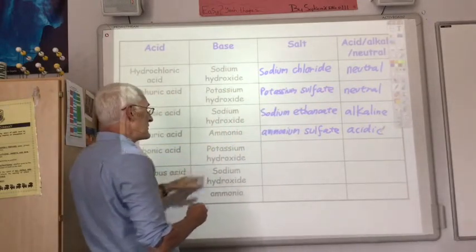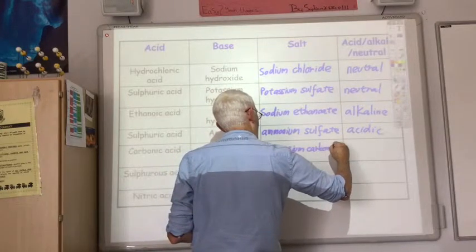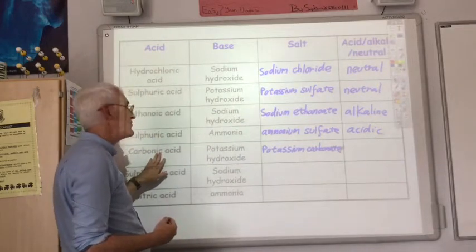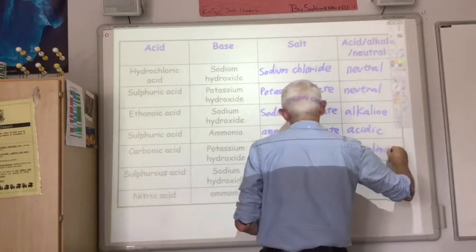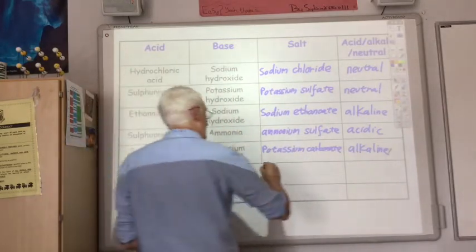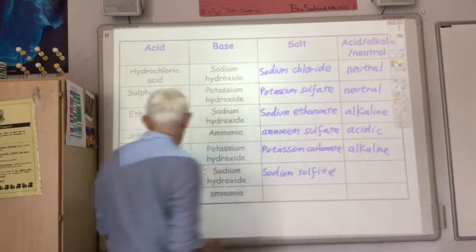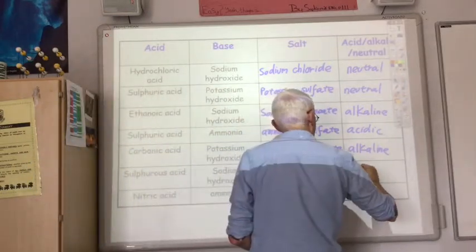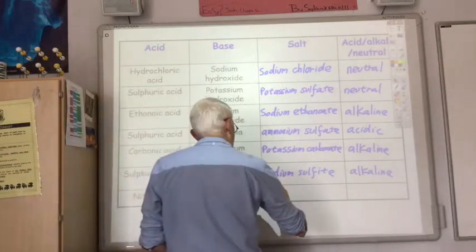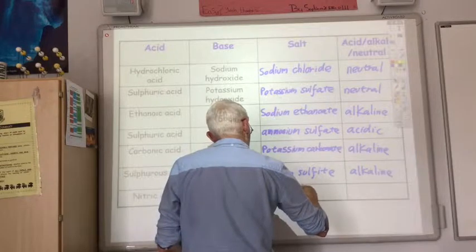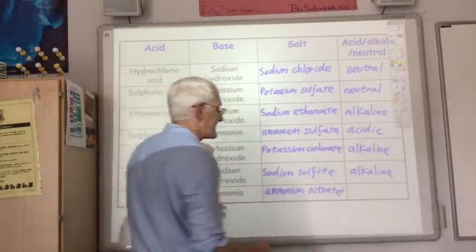Carbonic acid and potassium hydroxide: the salt would be potassium carbonate. Carbonic acid is one of the weak acids you should know; potassium hydroxide is a strong base, so that would be alkaline. Sulfurous acid and sodium hydroxide would produce sodium sulfite — not sulfate, sulfite — weak acid, strong base, so alkaline. And finally, nitric acid and ammonia: that would produce ammonium nitrate — strong acid, weak base — so that would be acidic.